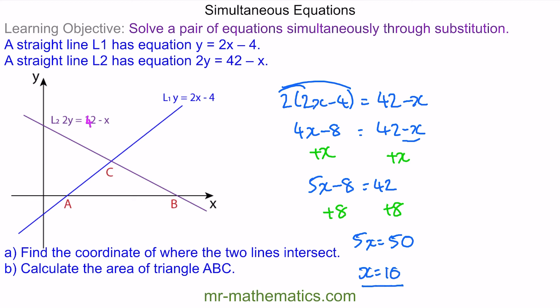Now we can substitute x equals 10 back into this equation. So we have y equals 2 lots of 10 minus 4, y equals 16, where C is at 10 and 16.